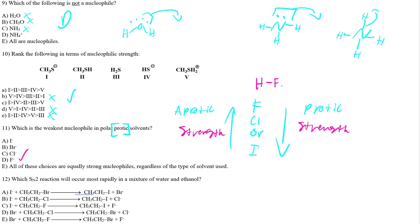Think of candy and toddlers for protic solvents. Moving on: which SN2 reaction is most likely to occur rapidly in a mixture of water and ethanol? Water and ethanol both have hydrogens, so this is a protic solvent. In a protic solution, iodide or bromide are favored. Fluoride is slow in protic — like taking candy from a toddler.